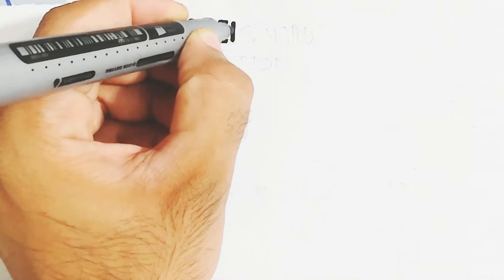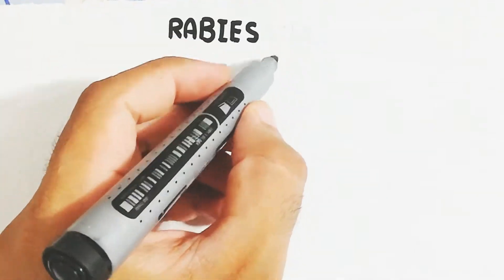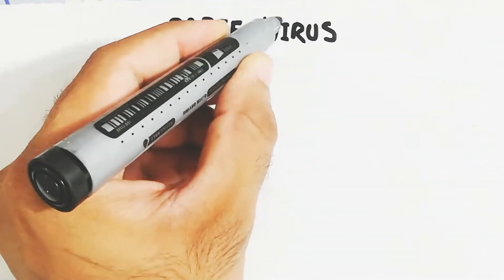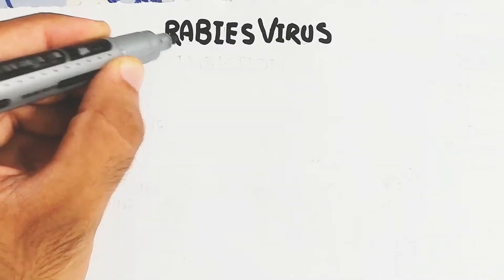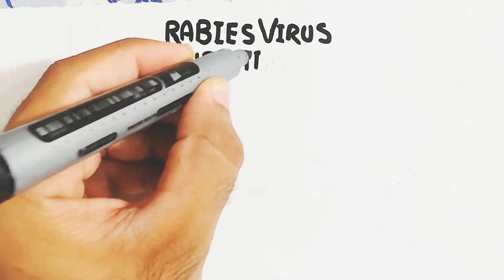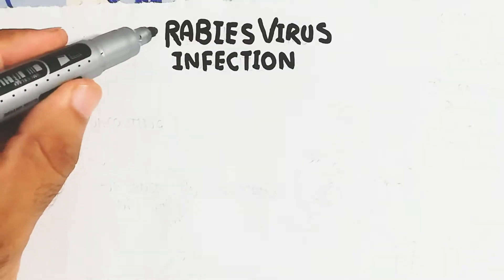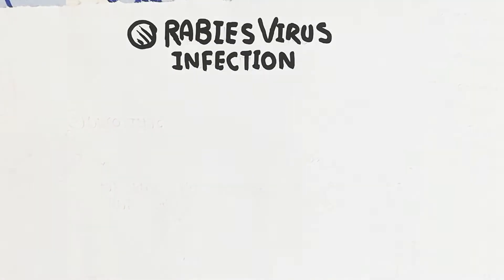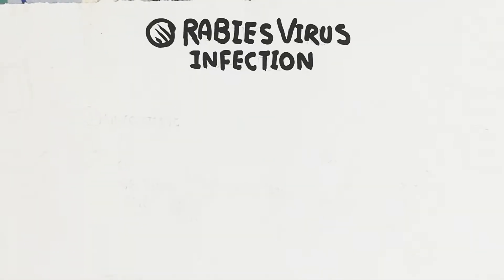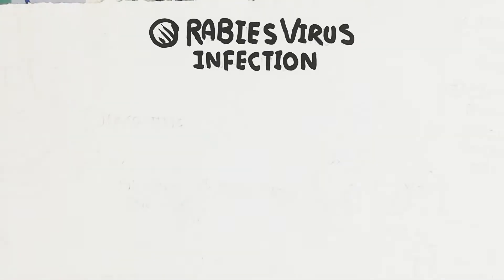In this video we will discuss the rabies viral infection. The rabies virus is present in dogs. Based on their environment, if dogs are kept in bad conditions, the chances of rabies virus being present in the dog are higher.